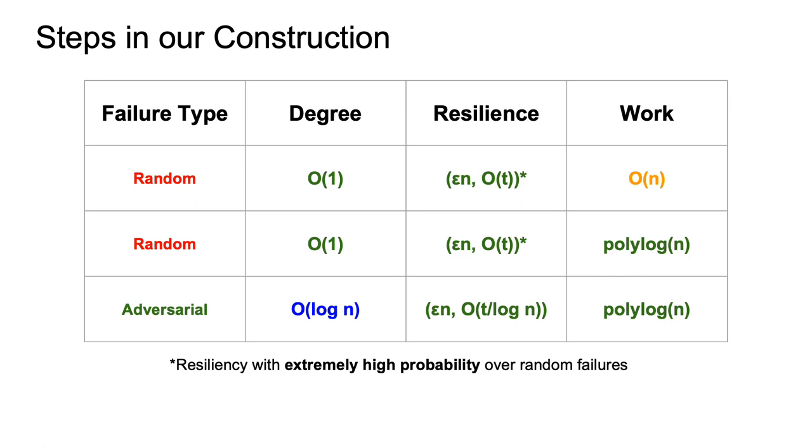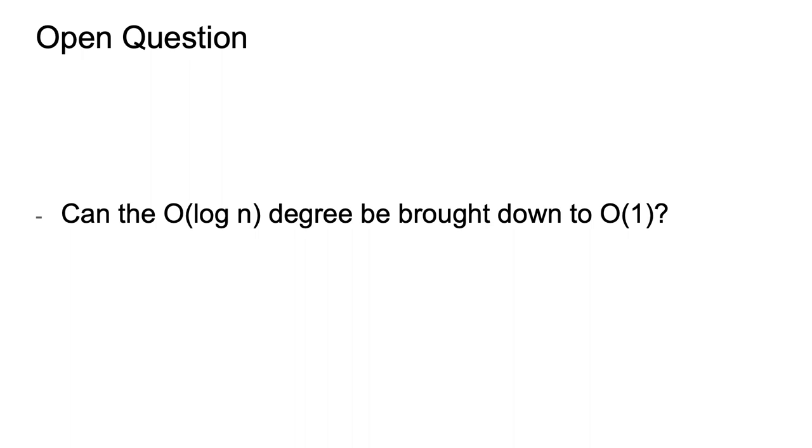So here, we see once again the slide that I showed you at the beginning, that walks through the three main contributions and the order in which we got to our final result. Now I leave you with the main open question in this problem. We've showed a protocol with optimal resiliency and almost optimal work. Maybe the work can be brought down from a polylog to a log. But the degree of our graph is O of log n.